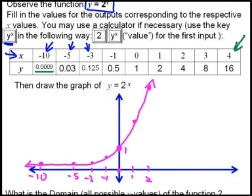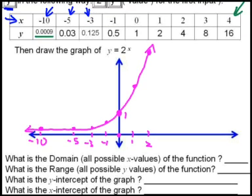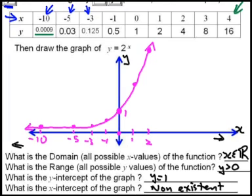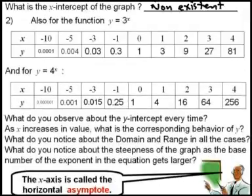A couple of questions about this: what is the domain, or all possible values of x for this function? It can go all the way left or right with no restrictions, so x is an element of the real number system. The range, or possible y values, is going to be bigger than 0 — the graph will never touch the x-axis. The y-intercept is y equals 1, and the x-intercept is non-existent — it will never cross the x-axis.